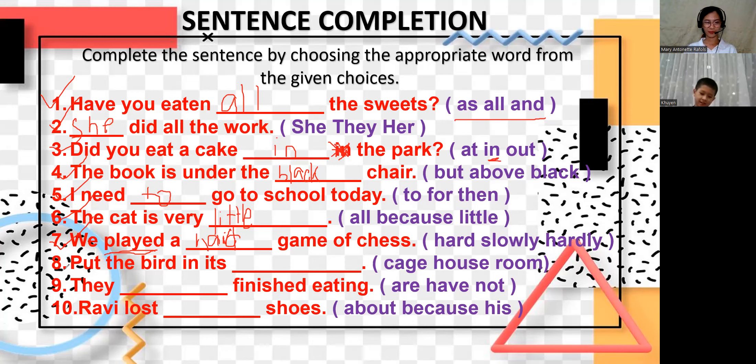Now let's go to eight. The bird in its cage. Yes, cage. And cage is correct. Okay, almost there. We only have two more left. They are finished eating. They are finished eating. Good job. Now last one. And his is correct. Good job.